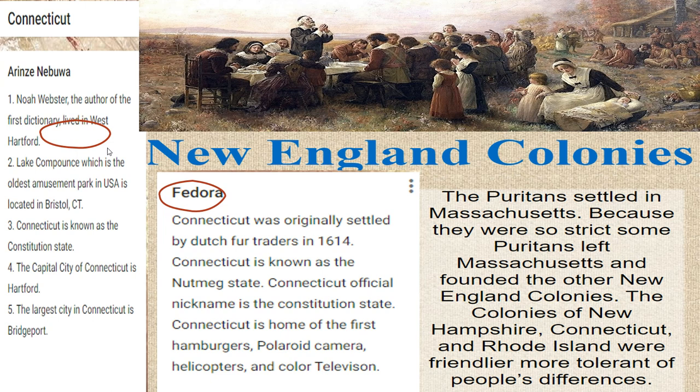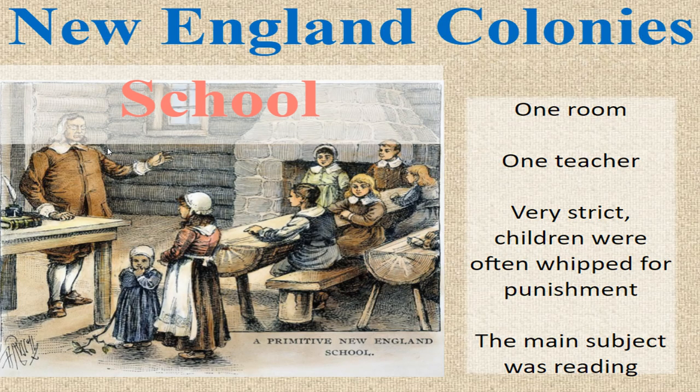Because the Puritans were so strict, some left Massachusetts and founded the other New England colonies. New Hampshire, Connecticut, and Rhode Island were friendlier and more tolerant of people's differences. In the New England colonies, schools had one room and one teacher — no matter what grade you were in, everyone was in the same room. Children were often whipped for punishment, and their main subject was reading.